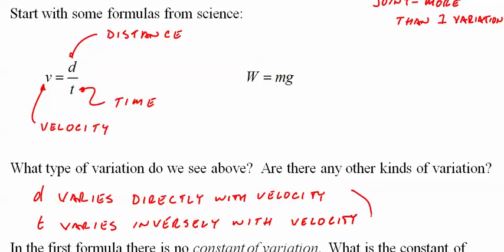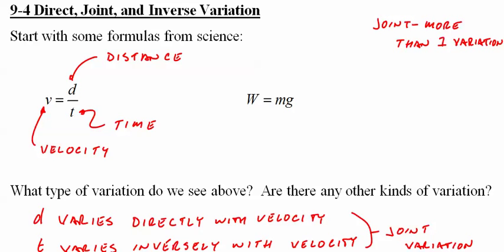Together, we call it joint variation. Now velocity is an interesting formula in that it's just straight distance over time by definition.